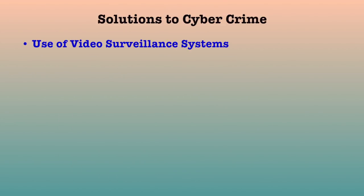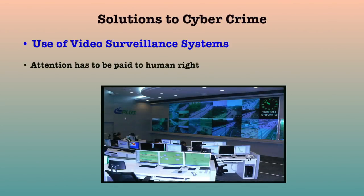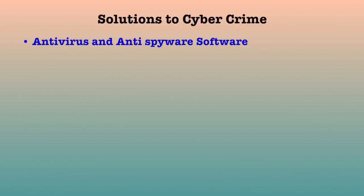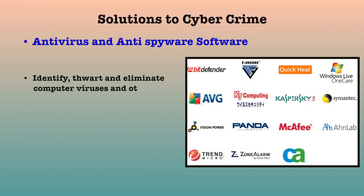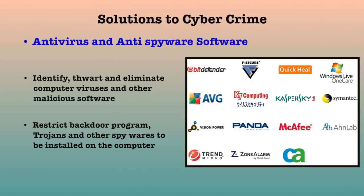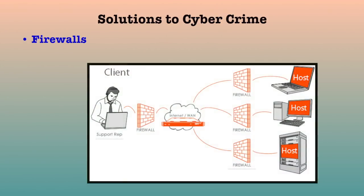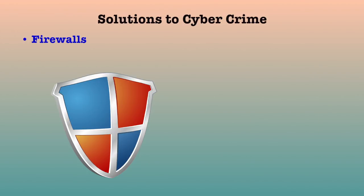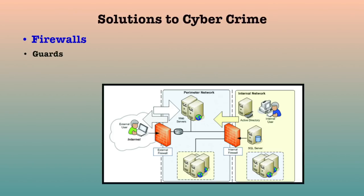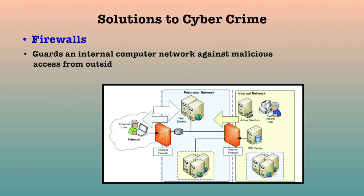Use of Video Surveillance Systems is another solution, though attention must be paid to human rights and legal privileges. Antivirus software consists of computer programs that attempt to identify and eliminate computer viruses and other malicious software. Anti-spyware is used to restrict backdoor programs, Trojans, and other spywares from being installed on the computer. A firewall protects a computer network from unauthorized access. Network firewalls may be hardware devices, software programs, or a combination of the two, and typically guard an internal computer network against malicious access from outside the network.